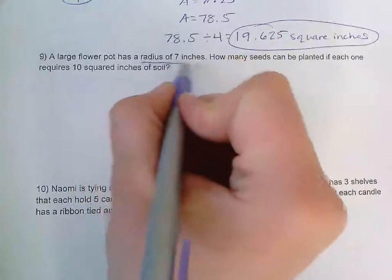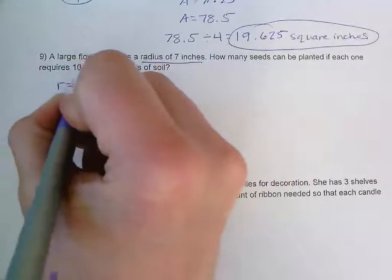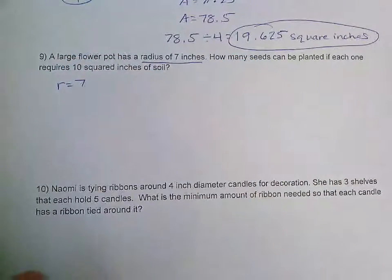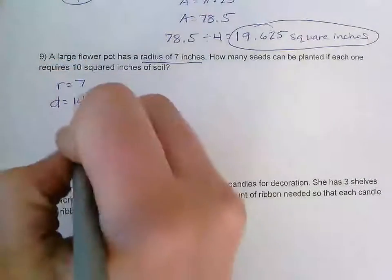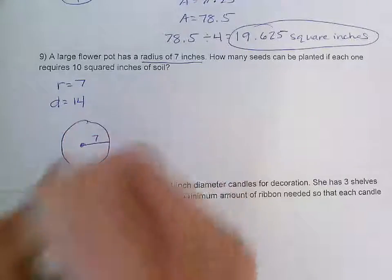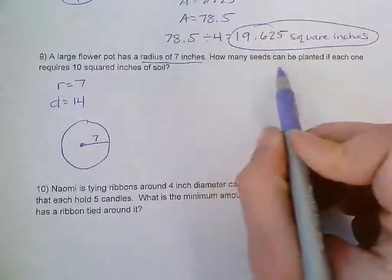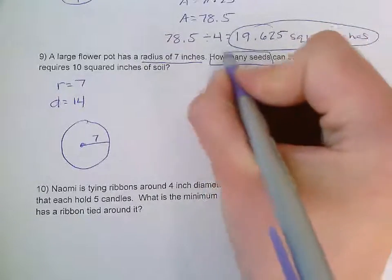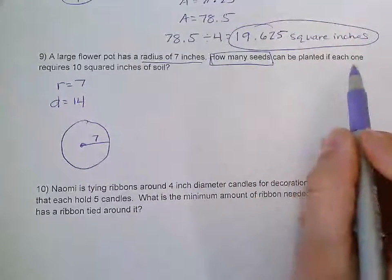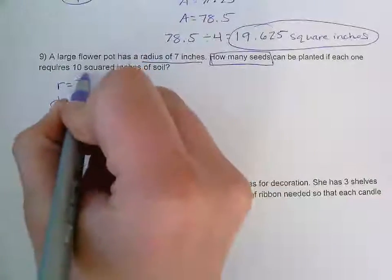To start off here, I see radius of seven inches. So radius equals seven. Takes two radius to make a diameter, so the diameter is twice as long. It's 14. I'm going to draw it out. Right here, I've got seven there. And I see here that it says, how many seeds can be planted? So this is the question I'm answering. How many seeds can be planted if each one requires ten squared inches?